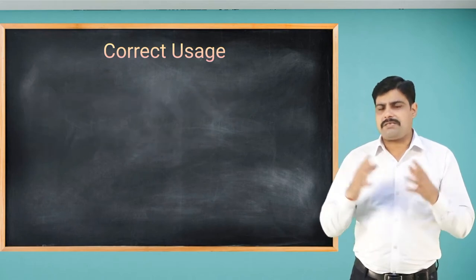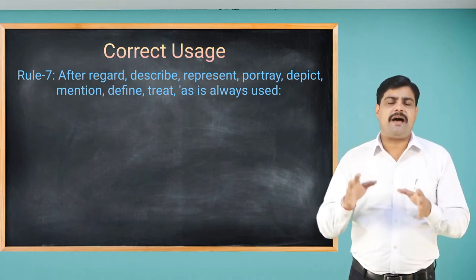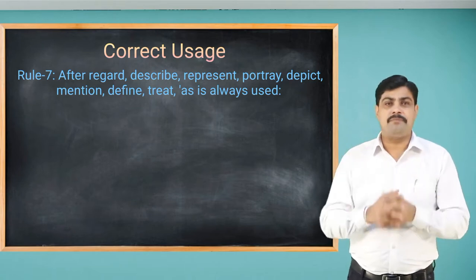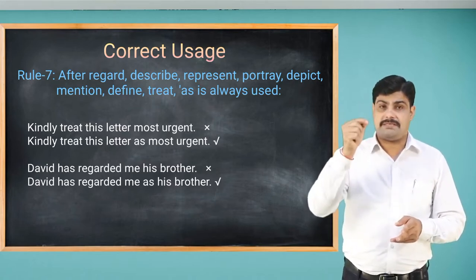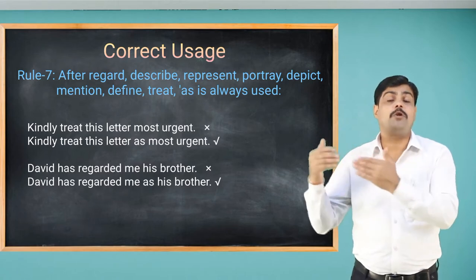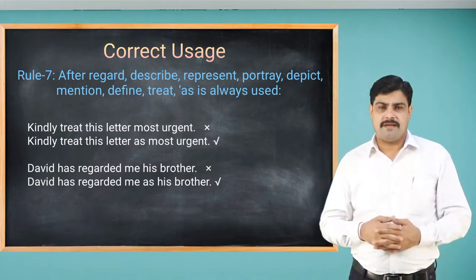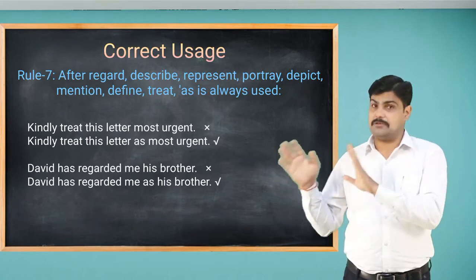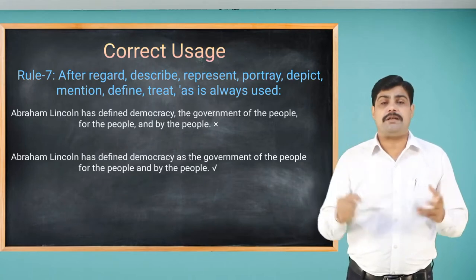Rule number seven: after verbs like regard, describe, represent, portray, mention, define, treat — the conjunction 'as' is always used. For example, 'Kindly treat this letter most urgent' is wrong — say: 'Kindly treat this letter as most urgent.' 'David has regarded me his brother' is wrong — say: 'David has regarded me as his brother.' Both sentences now use 'as' correctly after 'treat' and 'regard'.